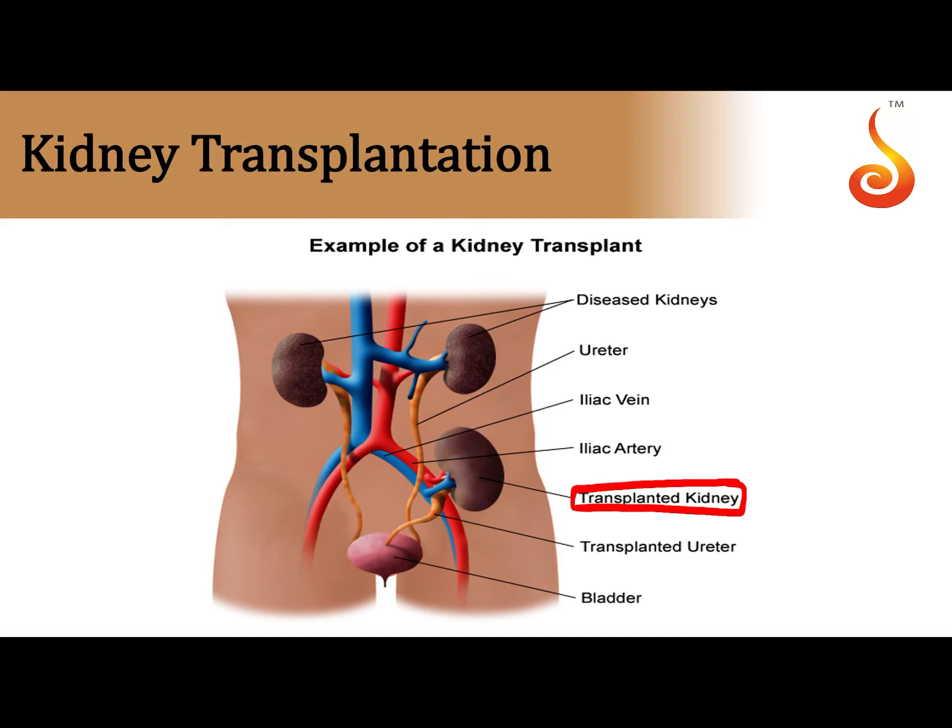Usually one kidney is sufficient — the person can make do with one kidney. Of course, it involves a lot of restrictions in routine life, but one kidney is sufficient to filter the blood and maintain low levels of urea and other nitrogenous waste below toxic levels. The ureter is also sutured up with the urinary bladder. This surgical technique is referred to as kidney transplantation.